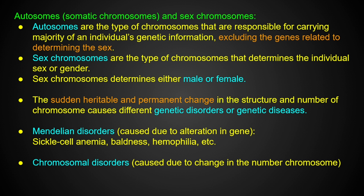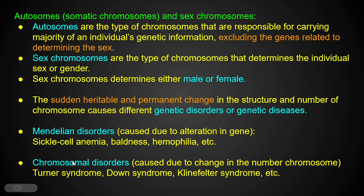Next is chromosome disorder. This occurs when the number of chromosomes is altered. Normally there are 46 chromosomes. When a person has 45 or 47 chromosomes, they can have a chromosome disorder. This gives rise to conditions such as Turner syndrome, Down syndrome, and Klinefelter syndrome. Down syndrome is very common.